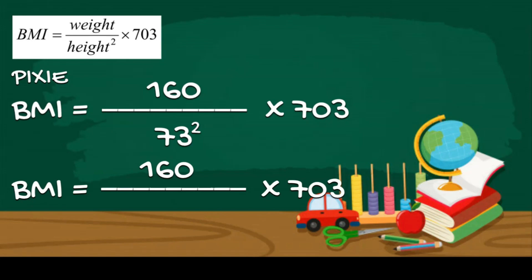Before we calculate the whole equation, let's multiply 73 first by itself because we have a square symbol to make it a whole number. 73 multiplied by itself is equal to 5329. We multiplied it first to make it easier for us to calculate.